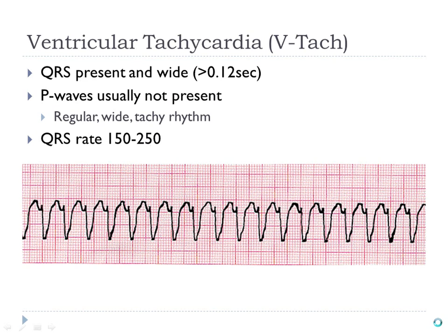Basically what VTAC is: a lot of PVCs in a row. VTAC is tachycardia — the rate is going to be very fast, and it's usually regular. The QRS complexes are wide and they all look the same. VTAC is the underlying rhythm, whereas a PVC is thrown into an underlying rhythm. VTAC is a rhythm you should be able to identify immediately — you look at it and you say, that's VTAC. You have no time to measure anything when your patient might be dying.